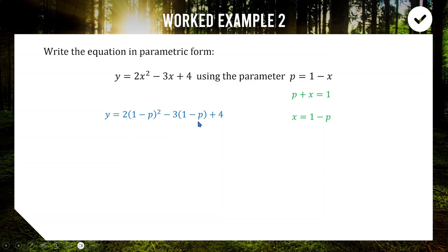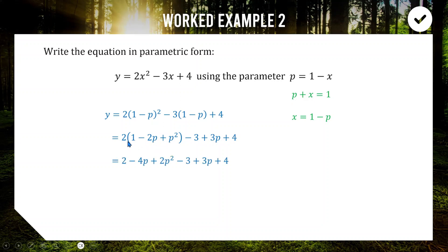Wherever we see an x, we replace it with one minus p. So we get two times one minus p squared, minus three times one minus p, plus four. Expanding the perfect square: one minus two p plus p squared, then doubling it, and expanding gives two minus four p plus two p squared. We also have minus three plus three p. Combining: two p squared, minus four p plus three p gives minus p, and two plus four minus three gives three. So y equals two p squared minus p plus three. These are our two final parametric equations: x equals one minus p and y equals two p squared minus p plus three.